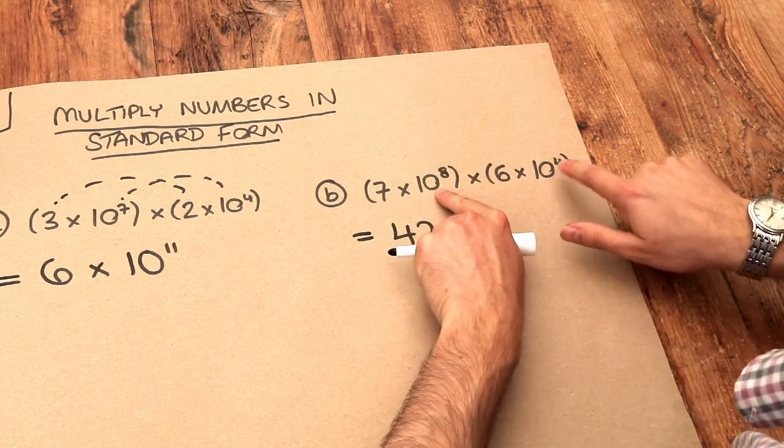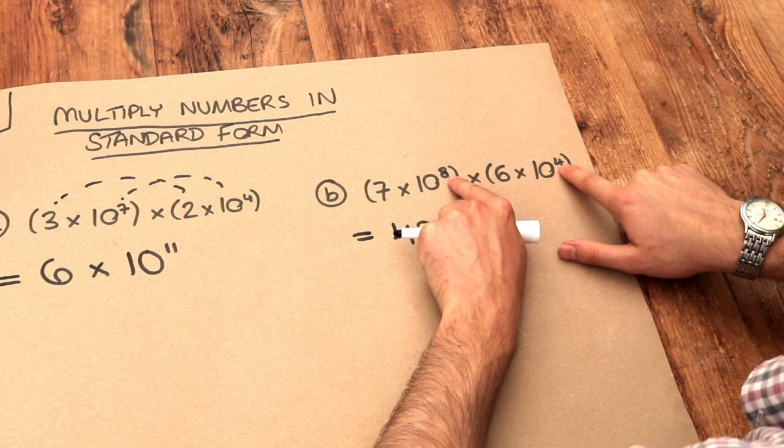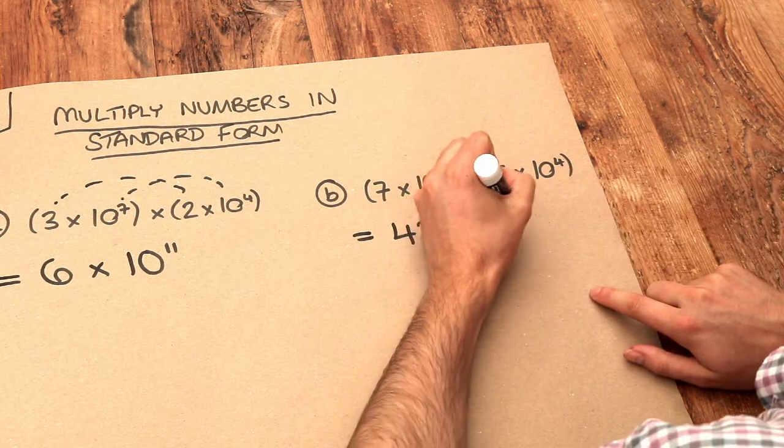And then we do the 10 to the 8 times the 10 to the 4. The two powers multiplied together. So we add the indices. 8 plus 4 is 12, so it's 10 to the 12.